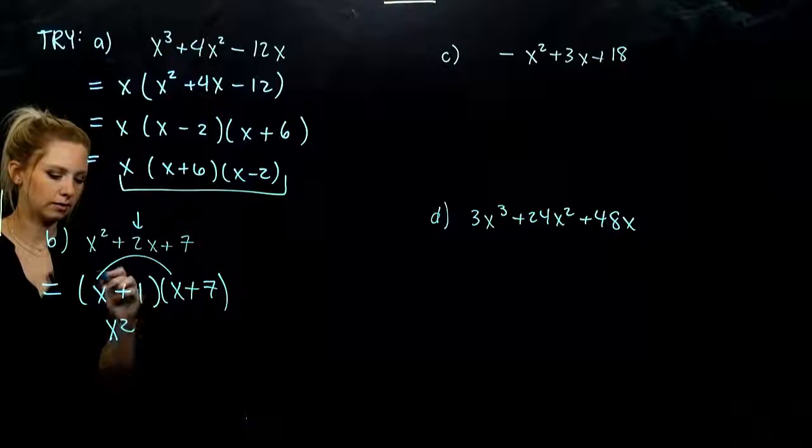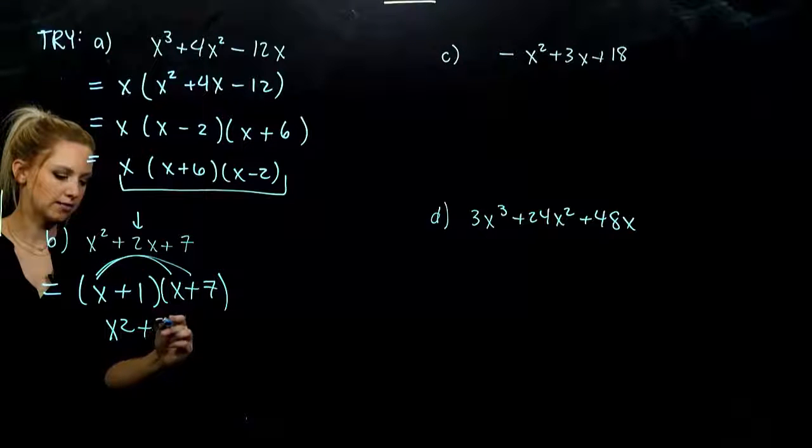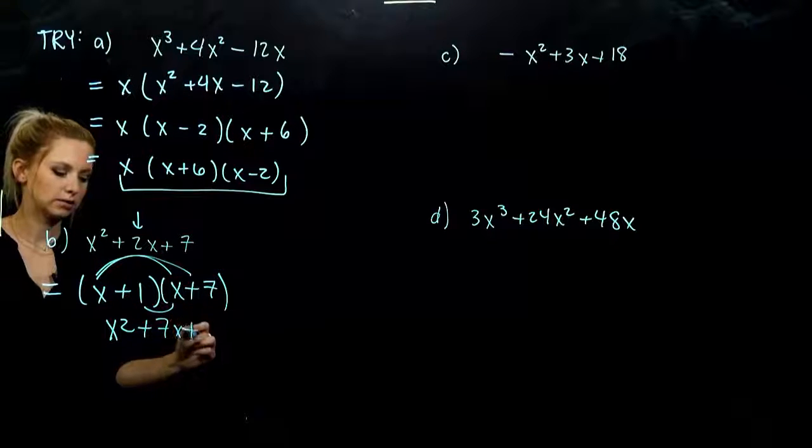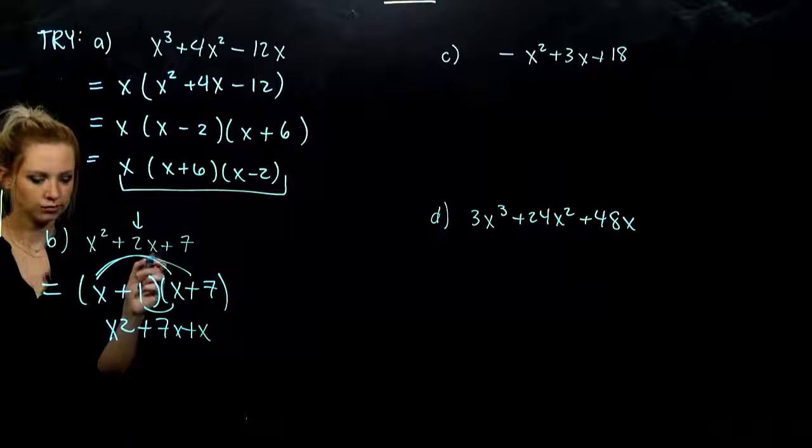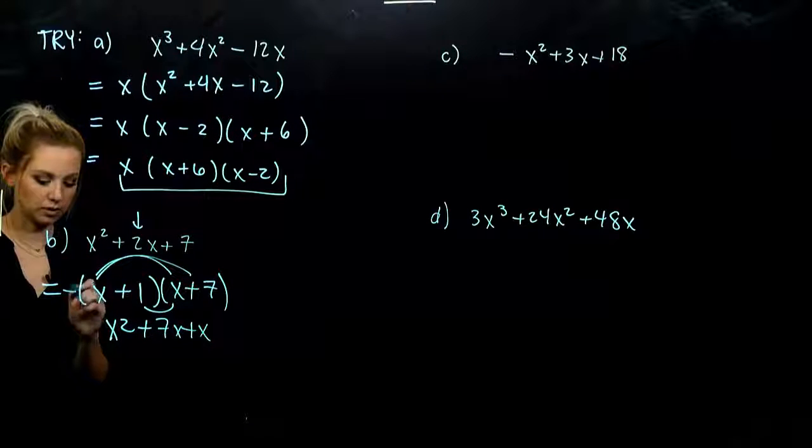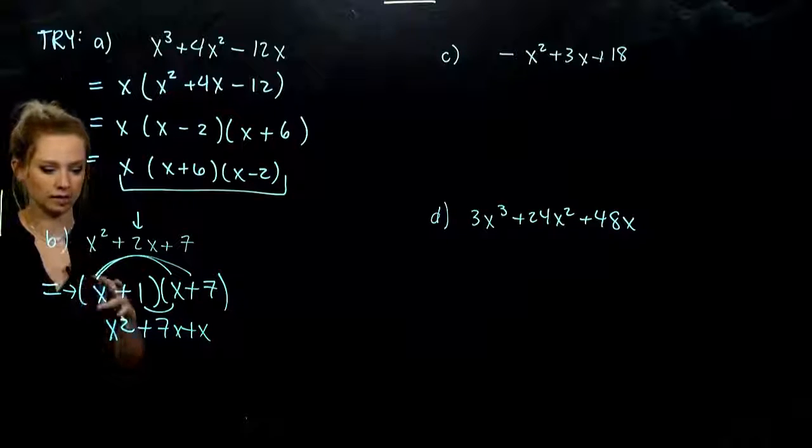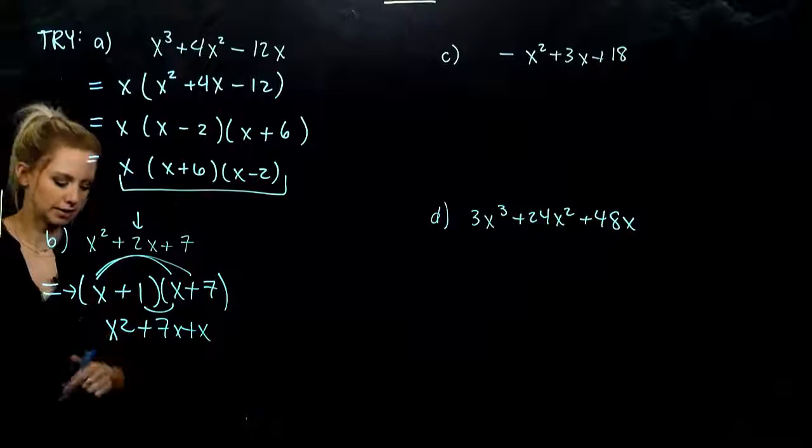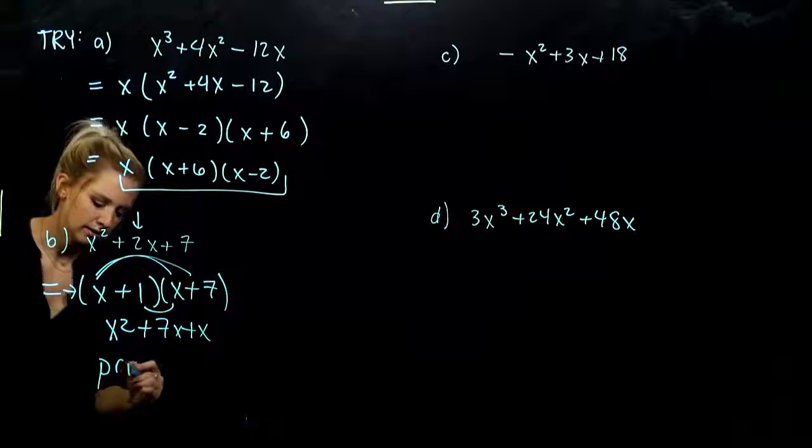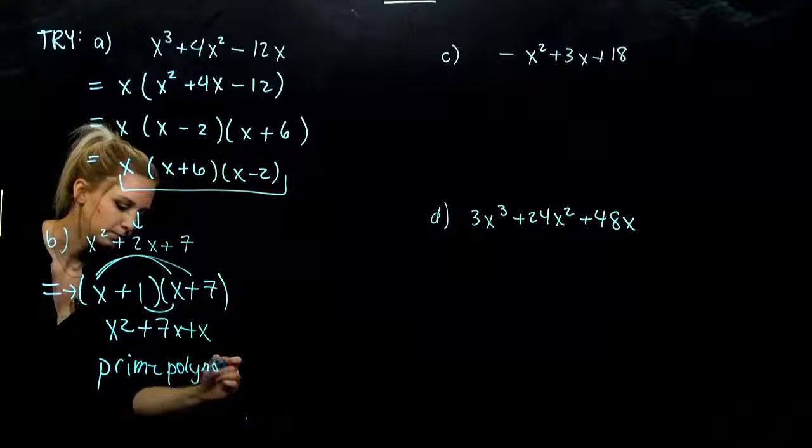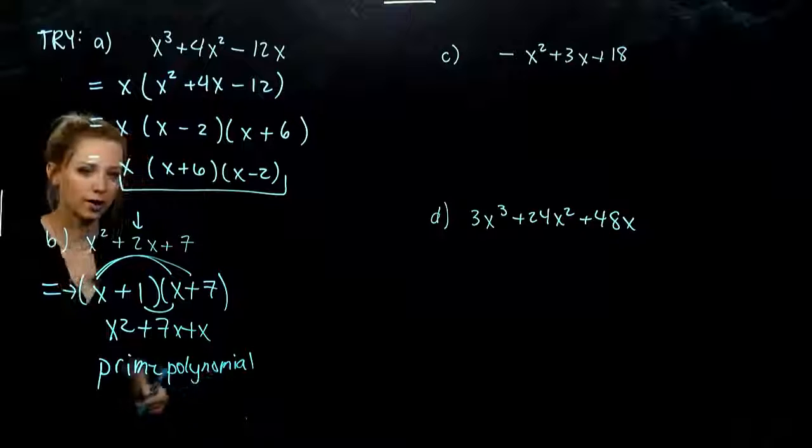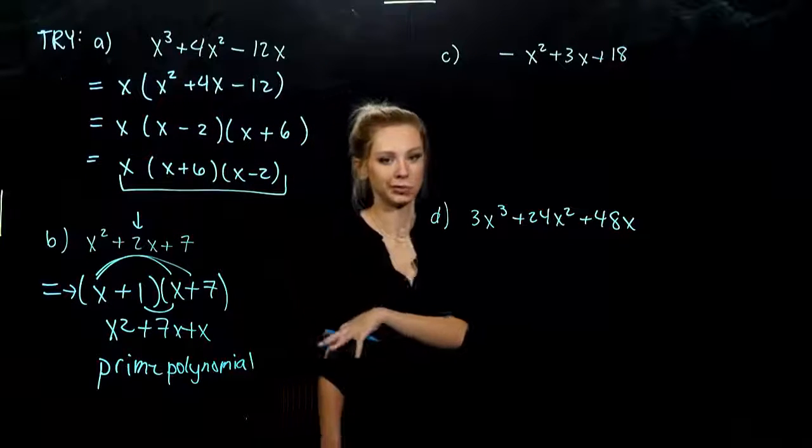I still get x squared. But now I'm getting plus 7x plus x. Eight factors, and I'm looking for two. But this is the only way that it could theoretically factor. So what does that tell us about this guy? It is a prime polynomial. We don't have the knowledge so far to be able to factor that. So we can't.